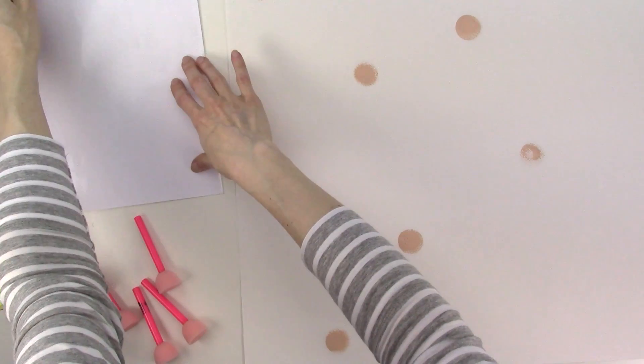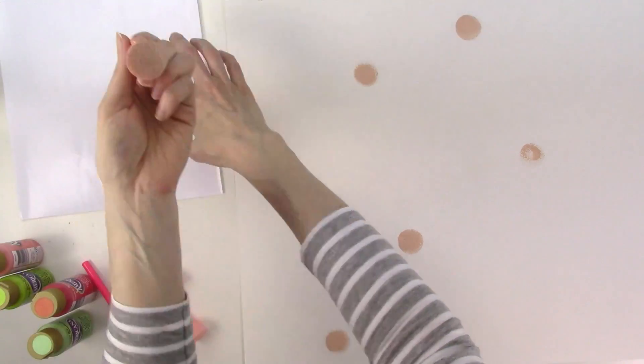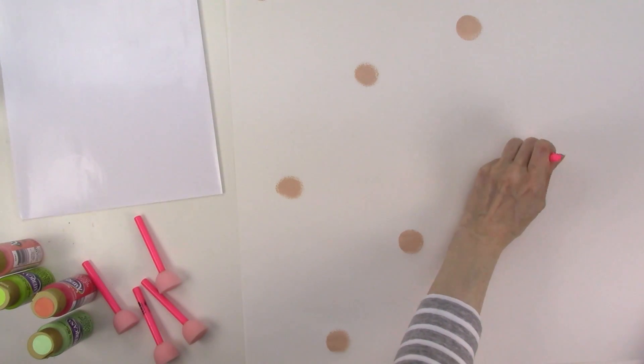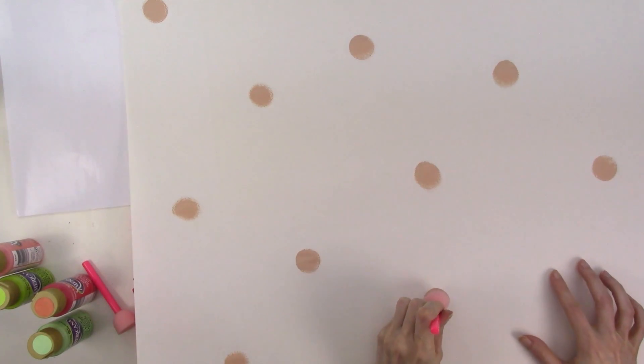I'm going to continue randomly adding dots in the first color, all across the piece of paper, reloading my pouncer after every 2-3 dots and adding more paint to the palette paper as needed. I'm spacing my dots pretty widely, but you can space them as close or as far apart as you'd like.